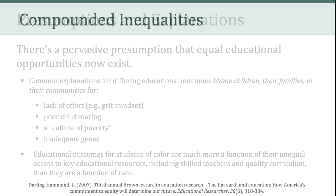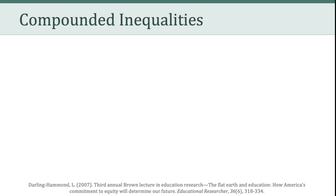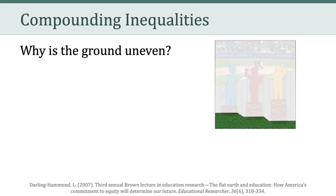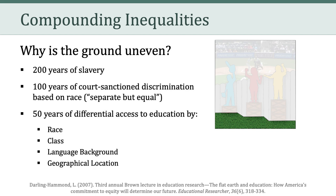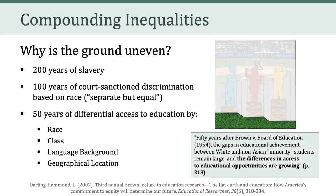However, Darling-Hammond counters saying that educational outcomes for students of color are much more a function of their unequal access to key educational resources, including skilled teachers and quality curriculum. She also raises the very important concept of compounding inequalities. And if we connect this to our illustrated metaphor, we can ask ourselves, why is the ground so uneven? Within the United States, the ground is uneven because of 200 years of slavery, 100 years of court-sanctioned discrimination based on race, the idea of separate but equal, and then 50 years of differential access to education as determined by race, class, language background, and geographical location. Quite powerfully, she argues that 50 years after Brown v. Board of Education, the gaps in educational achievement between white and non-Asian minority students remained large.